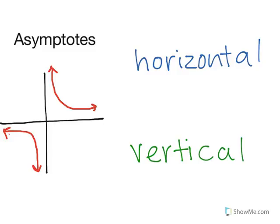Today we are talking about asymptotes. In math there are two main types of asymptotes. There's a horizontal asymptote which runs like that, and there's a vertical asymptote which runs up and down.